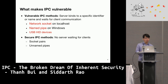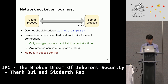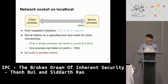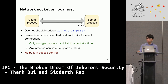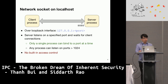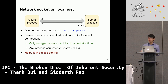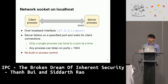Let's begin with network sockets. Even though network sockets are usually used over the network, they can also be used as IPC and are in fact one of the most widely used IPC methods. The server listens on the loopback interface on a specific port number and waits for client connections. As long as the port number is higher than 1024, any process regardless of its owner can listen on the port. Only a single process can listen to a port at a time, but multiple clients can connect to a server, and there is no built-in access control to restrict who can be the endpoint of network socket communications.